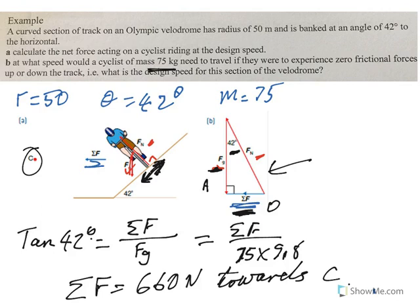Alright, and so in the design speed, the forces in this direction here, parallel to the velodrome surface is equal to zero. But we still need a force to make the person go around in the circle and that's what this one here is. Alright, part B, what speed would the cyclists travel if they were to experience zero frictional forces up or down the track?